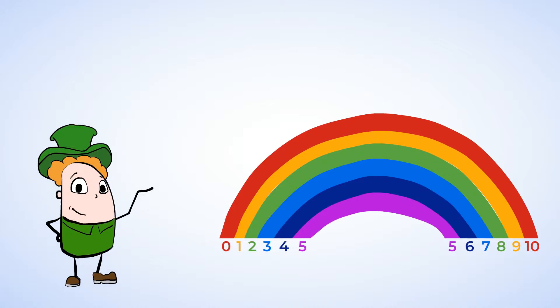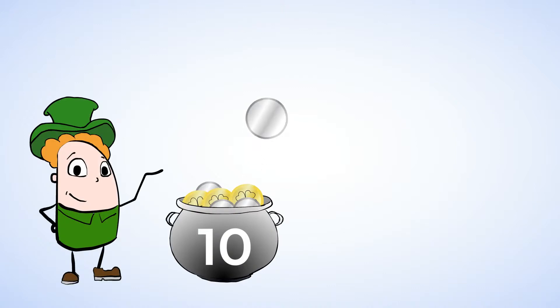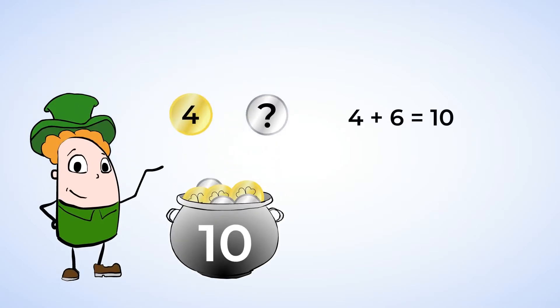Let's use our mighty rainbow to help solve math problems together. This pot has ten magic coins in it. Some are silver, and some are gold. Four of the coins are gold. How many are silver? Well, let's find four on our rainbow. There it is. And what does it connect to? Six. Four and six are our magic ten friends. And so we know there must be six silver coins.